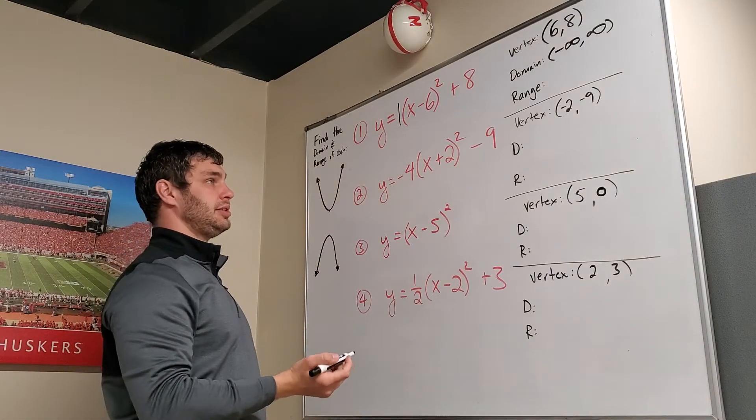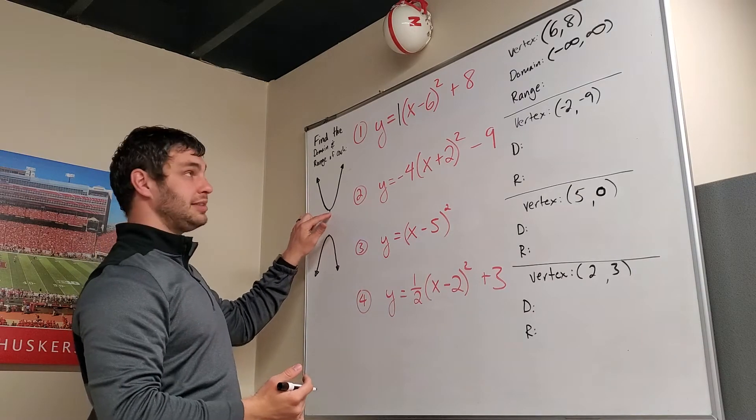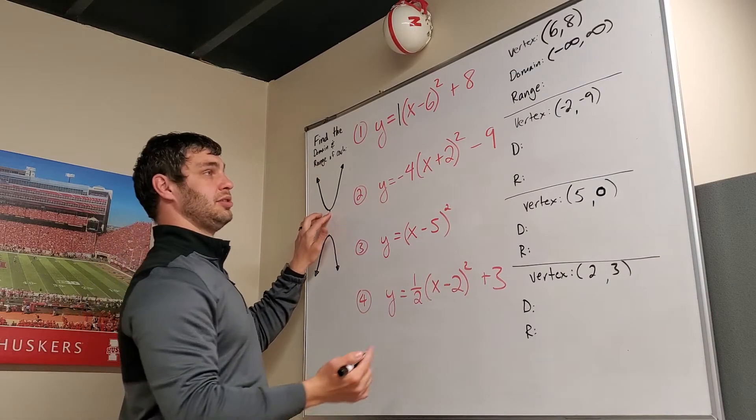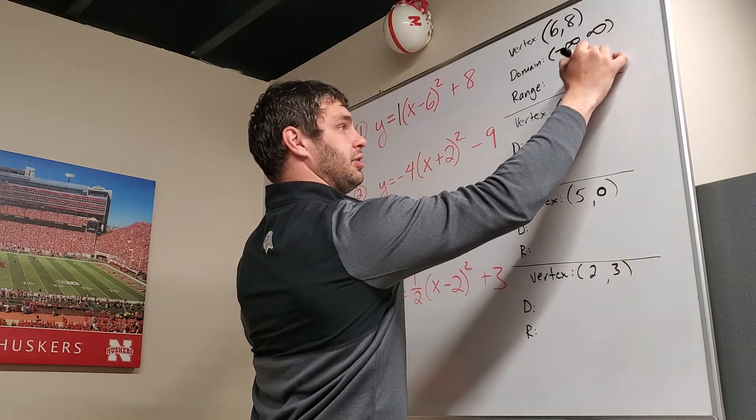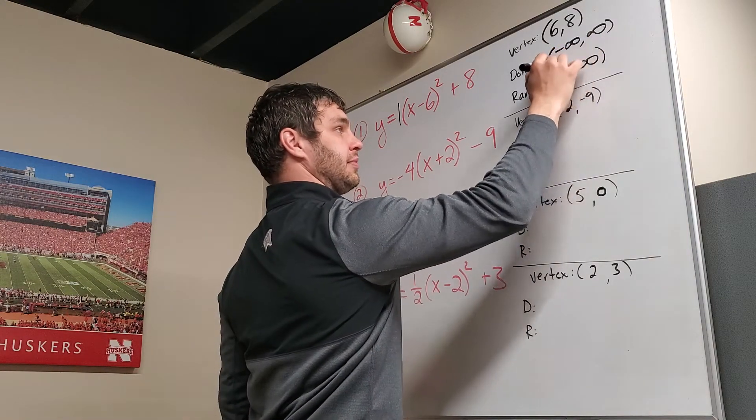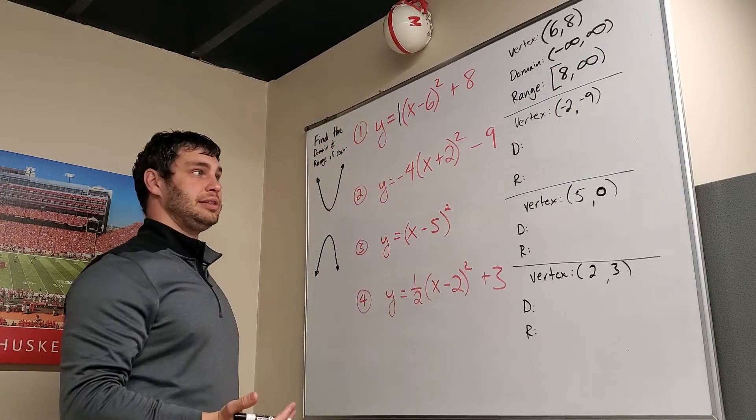All the domains will always be negative infinity to infinity with quadratics, but the range, however, since it opens up, the lowest point is that vertex. So the smallest y value we have is 8, and the largest one is going to be infinity. If we have a number, we're going to write that with a bracket; infinities get parentheses.